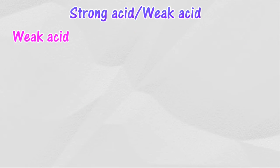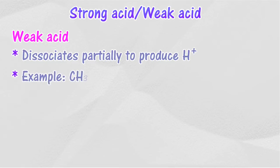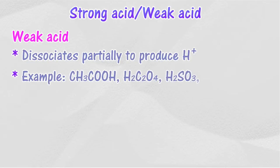A weak acid is an acid that dissociates partially in water to produce hydrogen ions of low concentration. The degree of dissociation of a weak acid in water is low, thus the concentration of hydrogen ions in an aqueous solution of weak acid is low. Weak acids contain a low concentration of hydrogen ions which move freely.